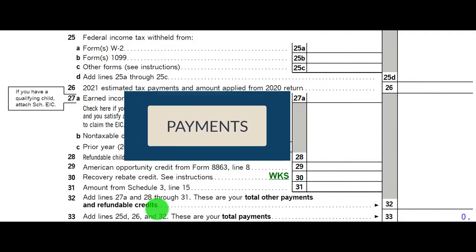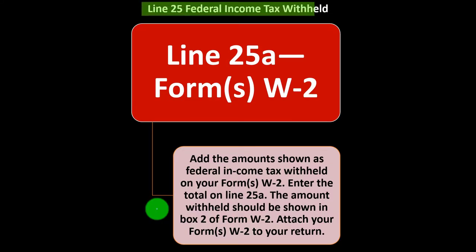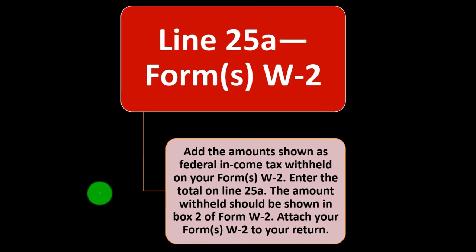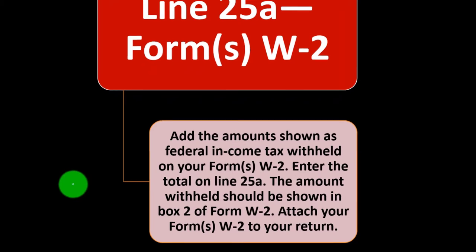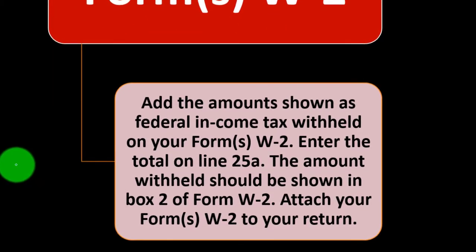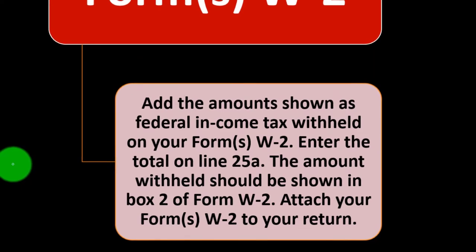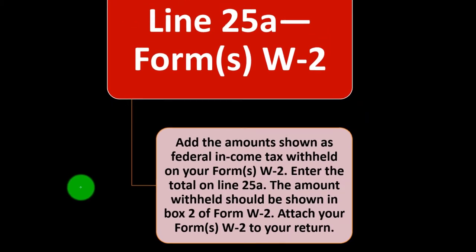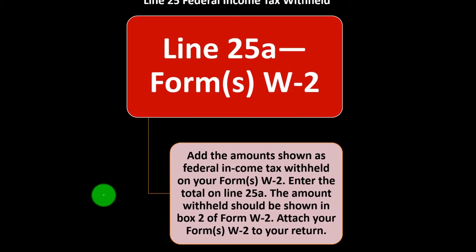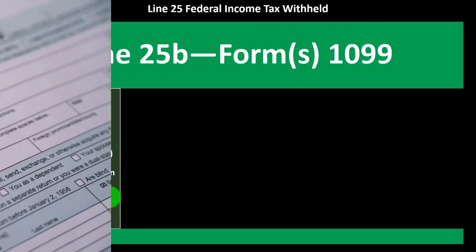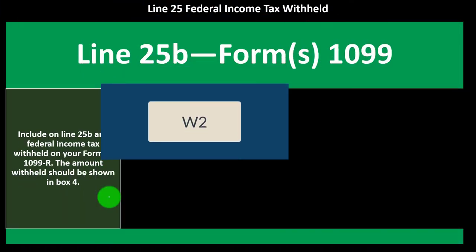Focused on the payments: Line 25, Federal Income Tax Withheld. Line 25A, Forms W-2 — add the amounts shown as Federal Income Tax Withheld on your Forms W-2 and enter the total on line 25A. The amount withheld should be shown in Box 2 of Form W-2. The W-2 will typically show your income on line 1 and withholdings on line 2. You might have multiple W-2s, and you'd add those up.